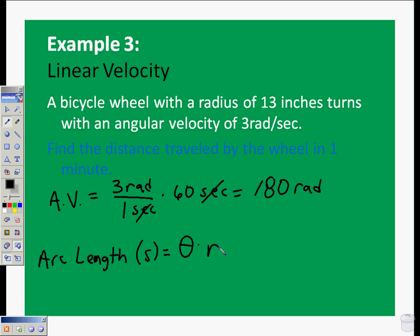Since we already have theta, this is going to be equal to our total angle. We'll plug in what we know. Since it's a radius of 13, we'll multiply that times 180, and that's going to give us 2,340 inches.